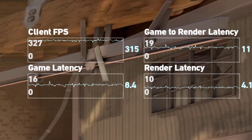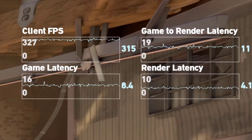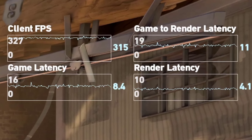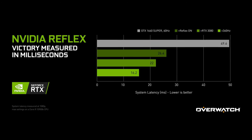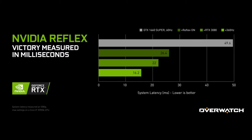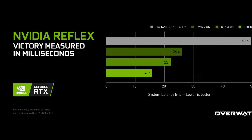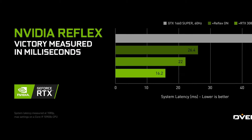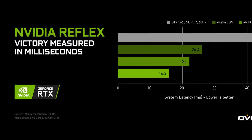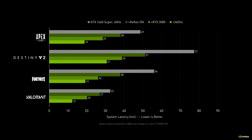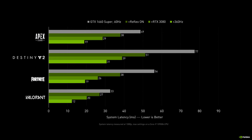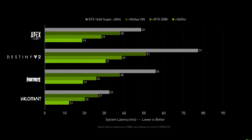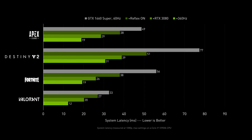NVIDIA will continue expanding Reflex capabilities and compatibility across more games and hardware. The underlying technology can also evolve from simply reducing render queues to even tighter optimization between CPU and GPU operations. And perhaps NVIDIA will offer an advanced software latency analyzer usable by anyone in the future.